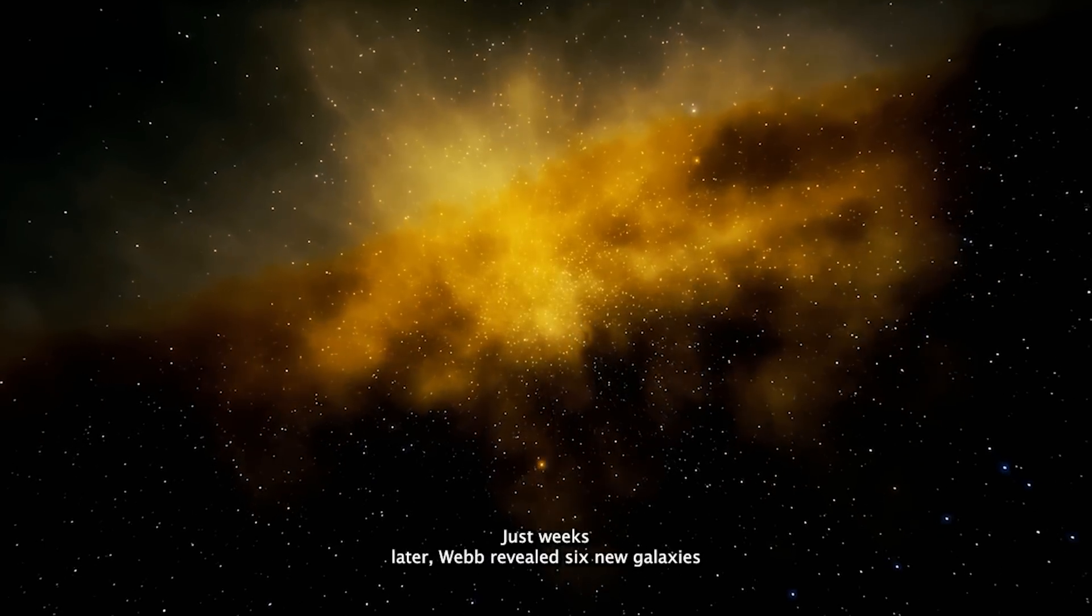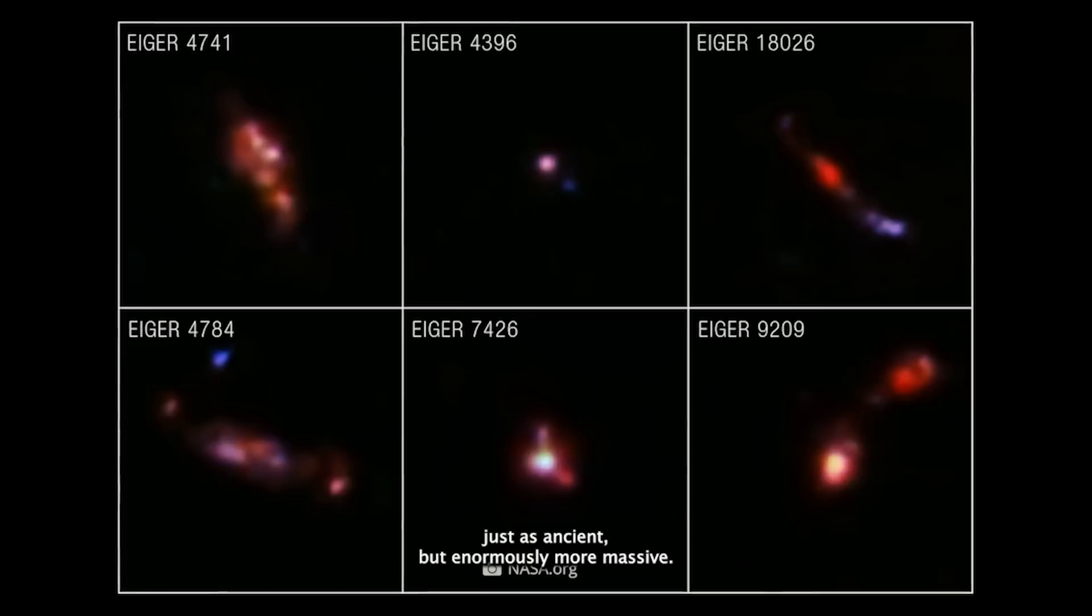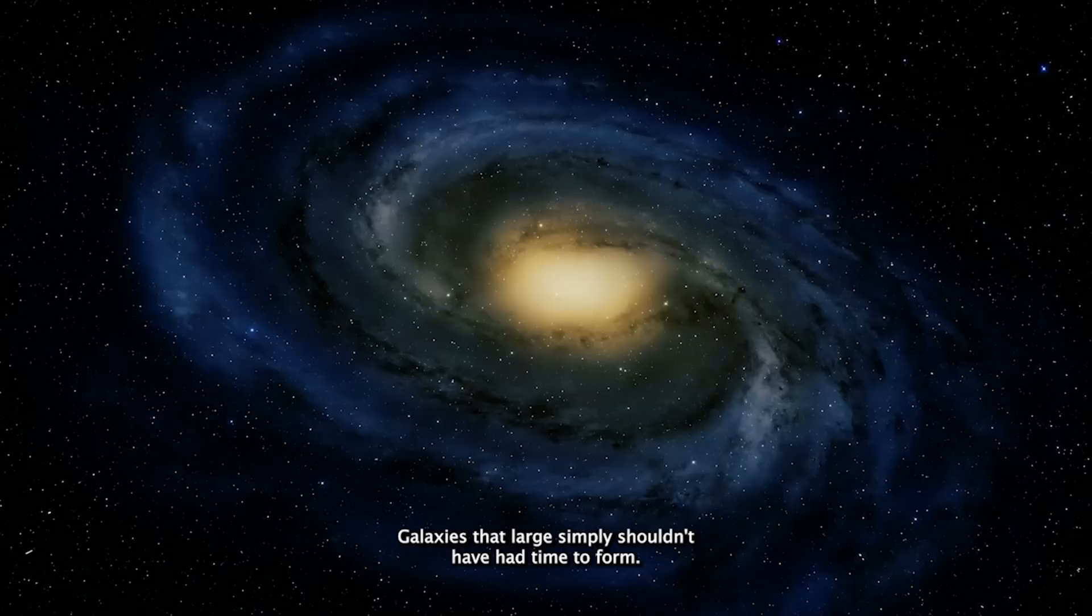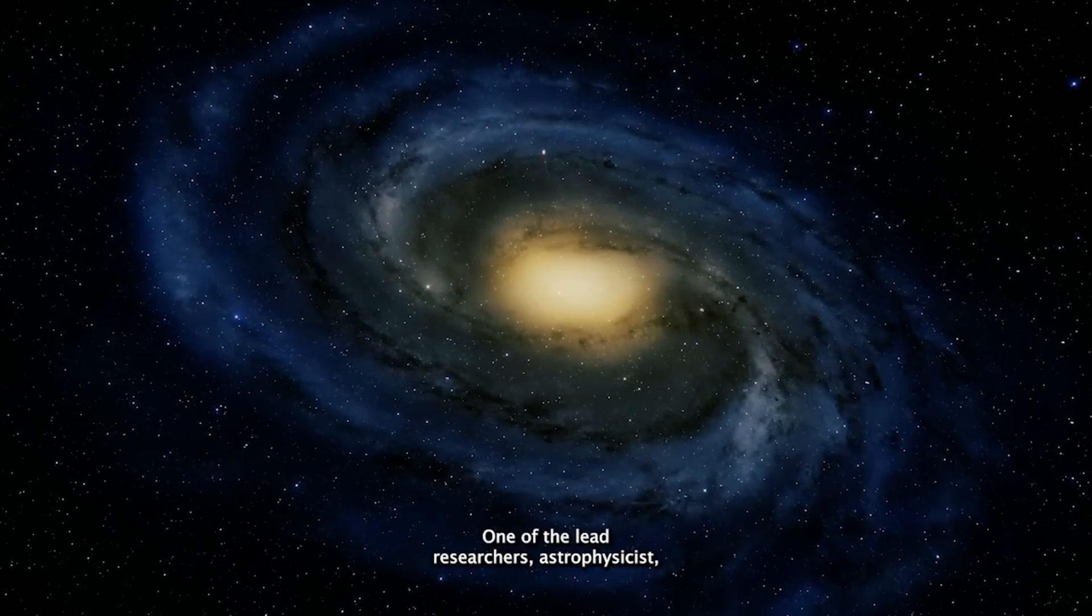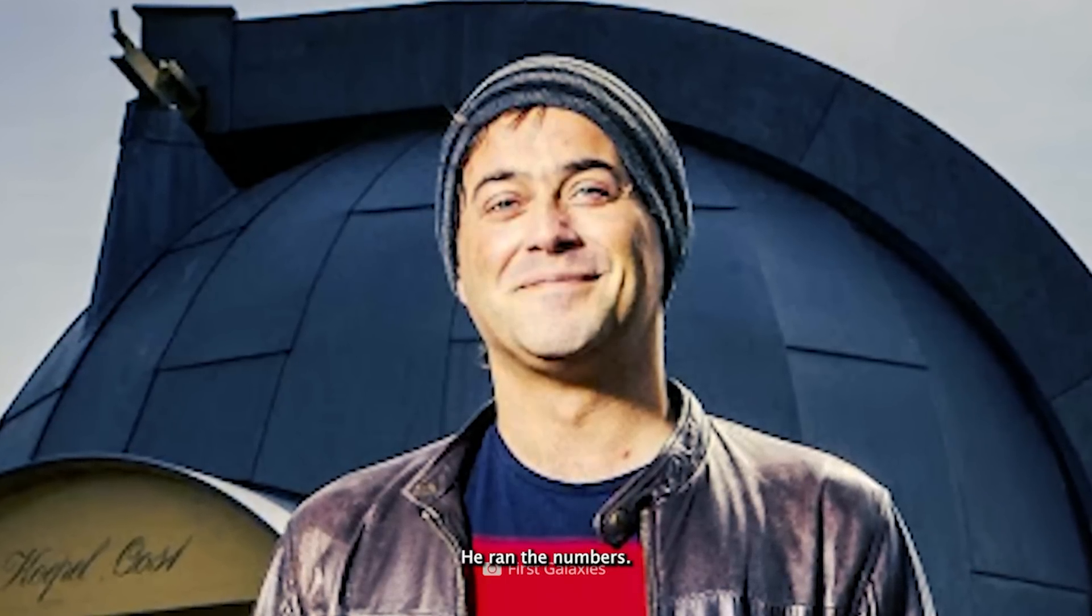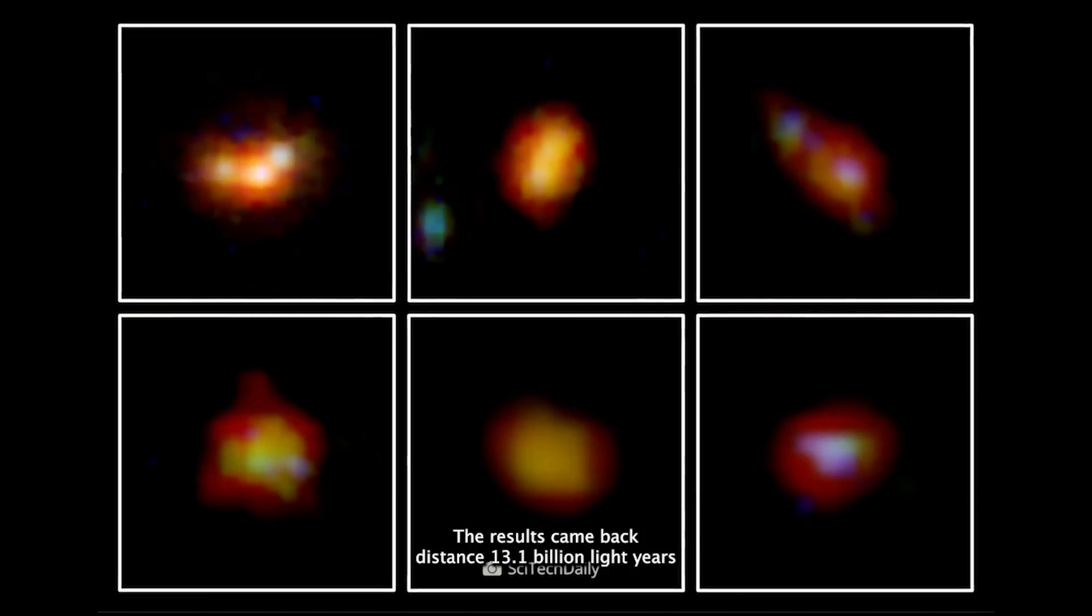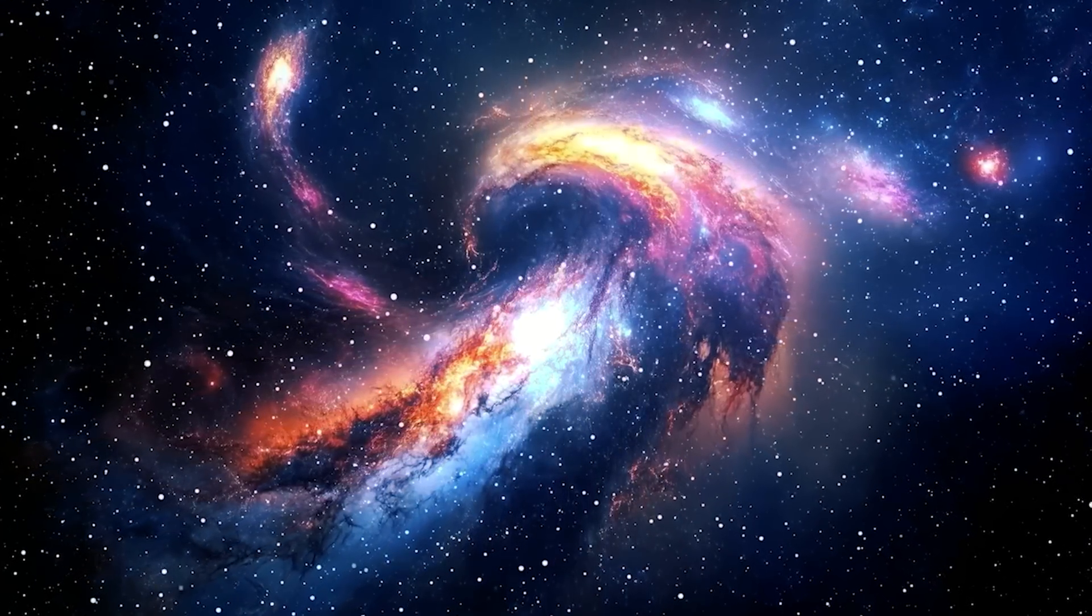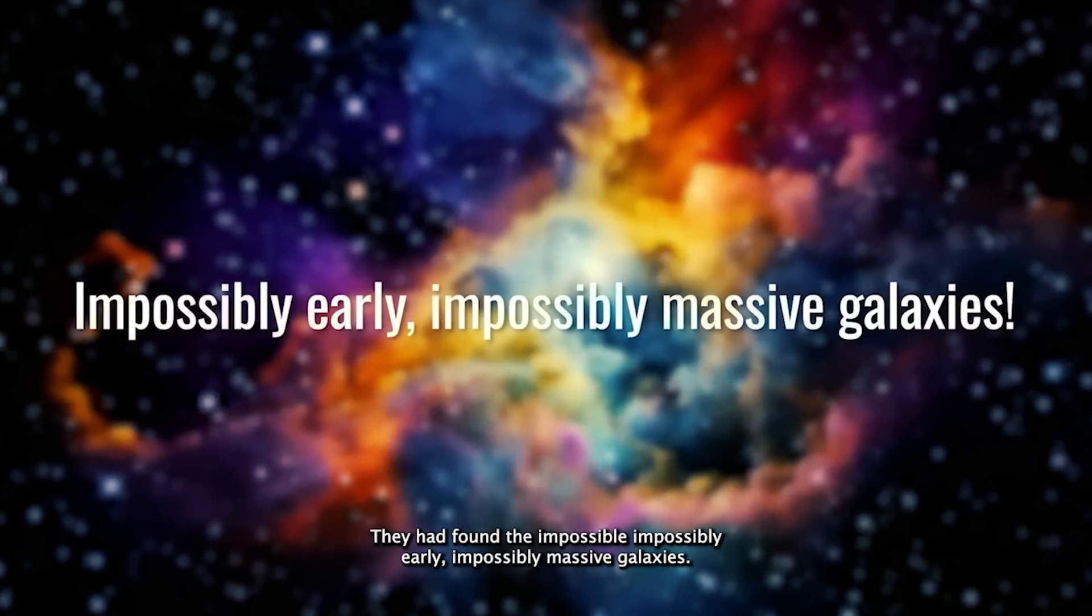Just weeks later, Webb revealed six new galaxies, just as ancient but enormously more massive. According to our models, galaxies that large simply shouldn't have had time to form. But the data was unrelenting. One of the lead researchers, an astrophysicist, remembers the moment vividly. He ran the numbers. The results came back: distance, 13.1 billion light years. Mass, equivalent to 100 billion stars. In his own words, 'I almost spat out my coffee.' They had found the impossible. Impossibly early, impossibly massive galaxies. Galaxies that, by all logic, shouldn't exist.